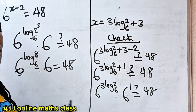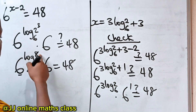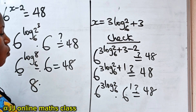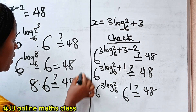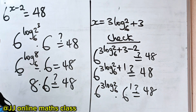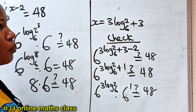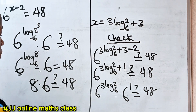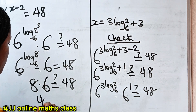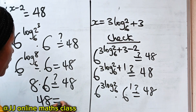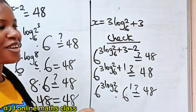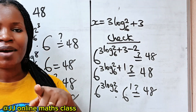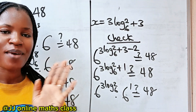Since this base and this log base are the same, the whole expression 6 to the power of log₆2 raised to the 3rd power equals 2 to the 3rd power, which is 8. So we have 8 multiplied by 6 — is this equal to 48? Basic mathematics tells us that 8 times 6 gives us 48, so 48 equals 48. That proves that the answer we got is correct. Thank you so much for watching. See you in my next video. Bye.